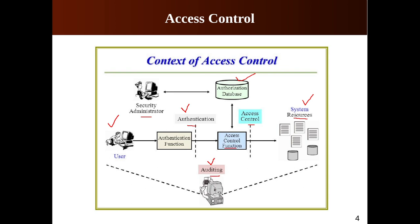Auditing is an independent review and examination of system records and activities to test for adequacy of system controls, detect security breaches, and recommend changes in control policy. It means keeping track of what activities are performed by users, at what time, and things like that. For example, in database applications we use log files to record different operations performed at different times.